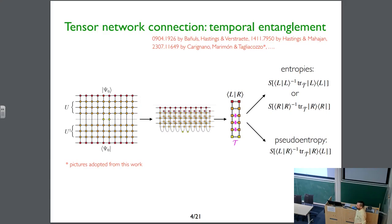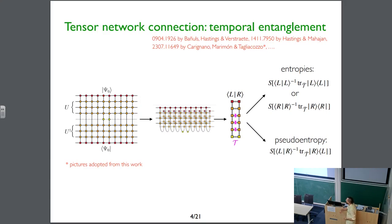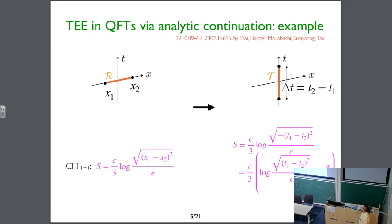There are strong reasons to consider this idea because of a tensor network connection. In practical terms for high-energy and gravity physicists, this connects to the universal result for entanglement entropy for a single interval in the vacuum of a CFT. What we can do is take this expression and analytically continue from x₁, x₂ lying in a spatial direction to x₁, x₂ extending along the time direction, which amounts in practical terms to introducing a factor of i in front of these coordinates.